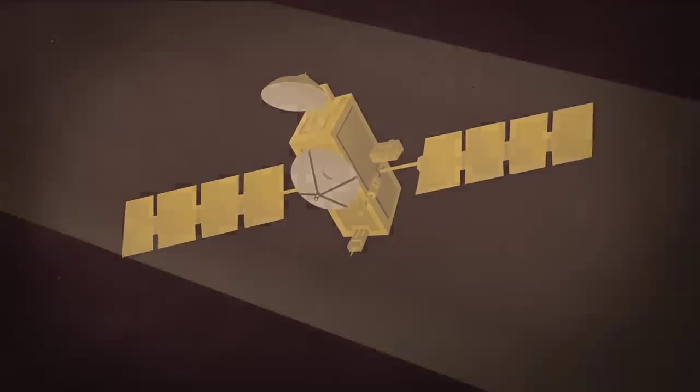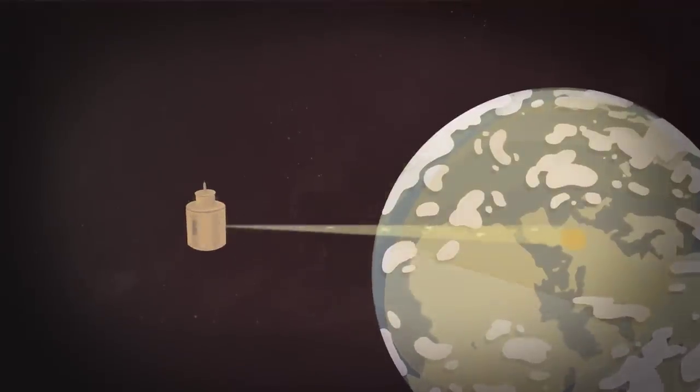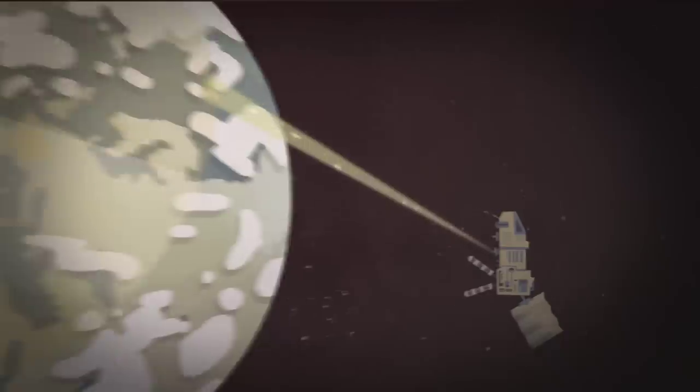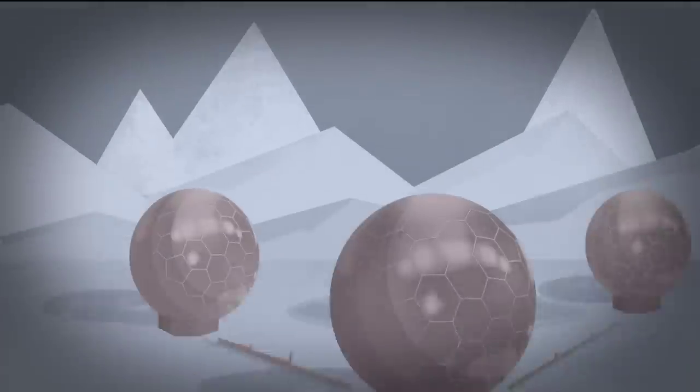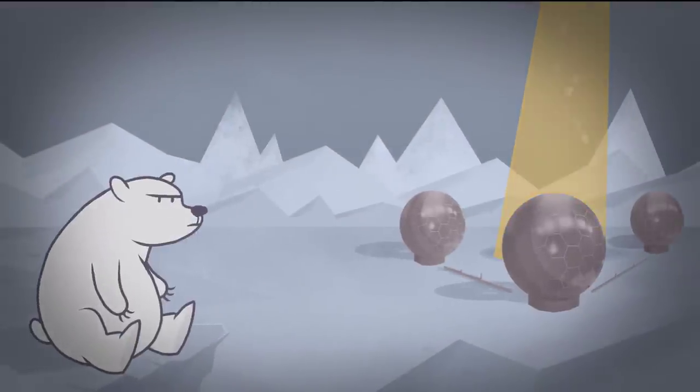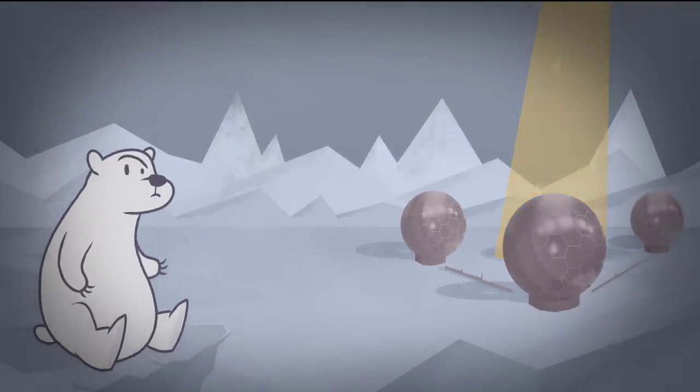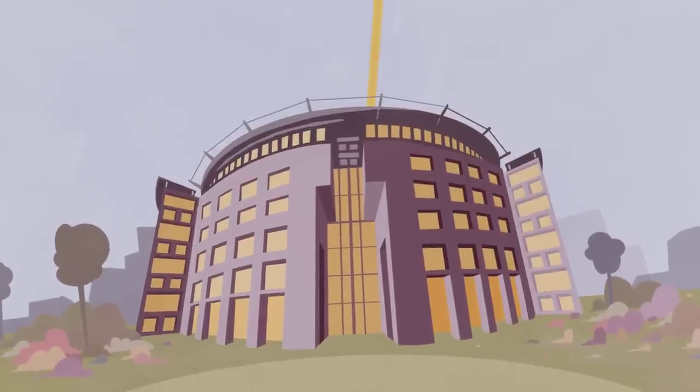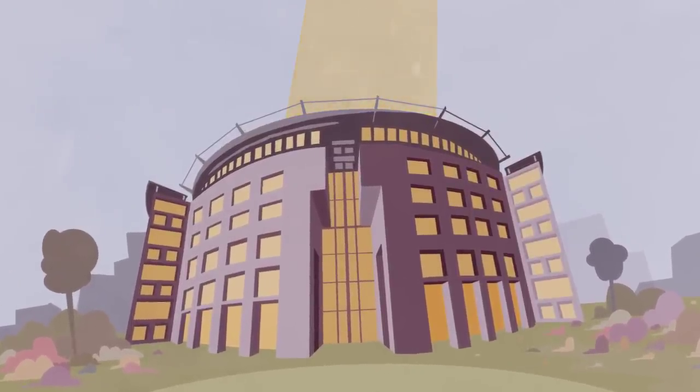All that data has to go somewhere. While Meteosat transmits to a ground station in Europe, METOP here is downloading its scans to a ground station in Svalbard, north of the Arctic Circle. Computers at Svalbard then send it on to EUMETSAT, or Mission Control.